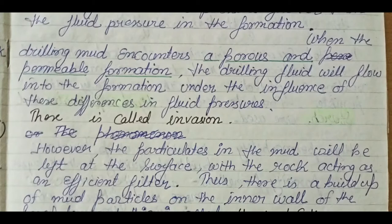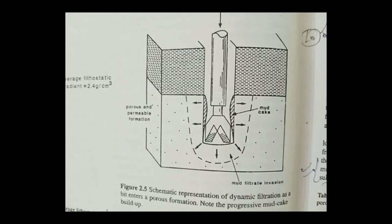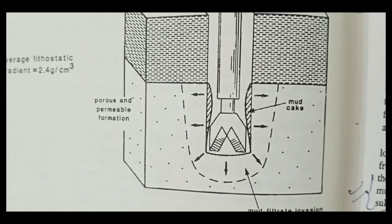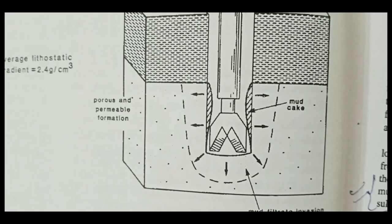The mud filtrate will flow into the formation while the solids will form a deposit around the borehole. There will be a buildup of mud cake on the borehole wall. You can see in this figure that the mud cake is built up on the borehole wall.